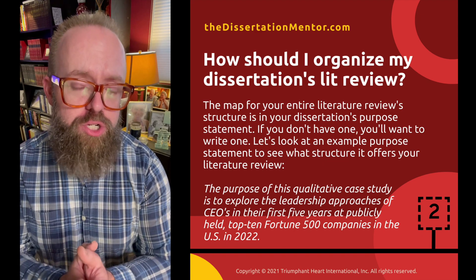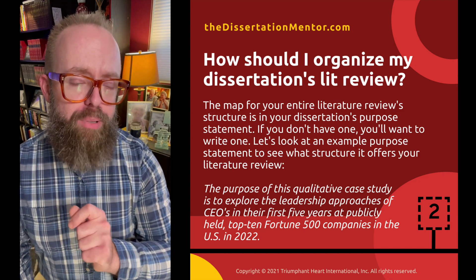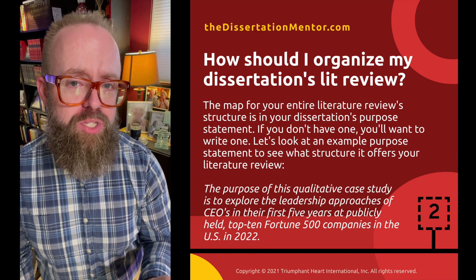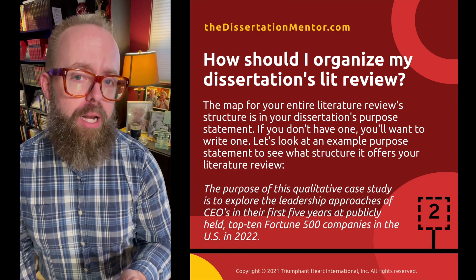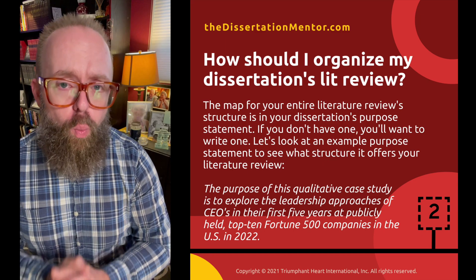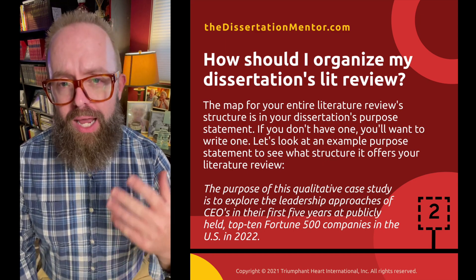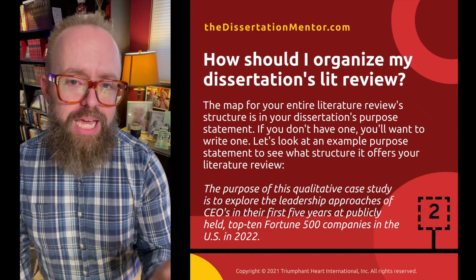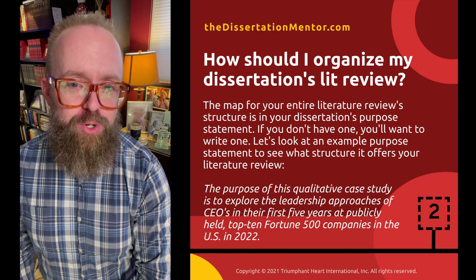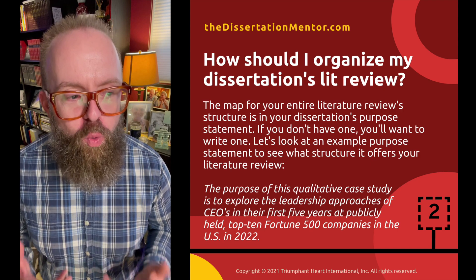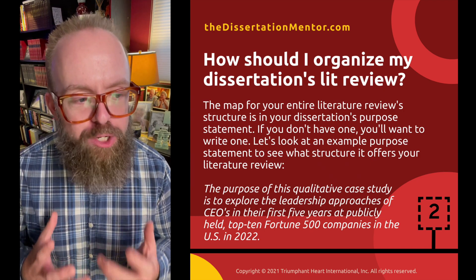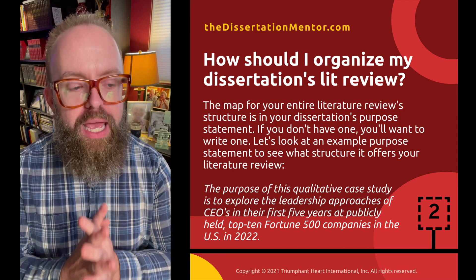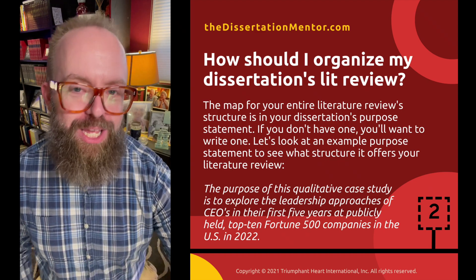So how do you organize your dissertation's literature review? The entire map of your literature review is found directly within your purpose statement. If you do not have a purpose statement, that's the first thing you need to do. You need to create a purpose statement that has the who, the what, the when, the where, and the how of your study. Another word for purpose statement would be the aim of the study. For example, this purpose statement reads: 'The purpose of this qualitative case study is to explore the leadership approaches of CEOs in their first five years at publicly held top 10 Fortune 500 companies in the U.S. in 2022.'